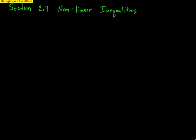All right, precalculus, here we go. This is section 2.7 on what we call nonlinear inequalities. The reason we call it nonlinear inequalities is because you should already know how to solve a linear inequality. For example, 2x minus 6 is greater than or equal to 8.